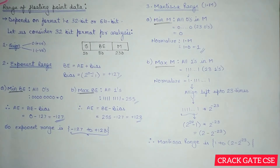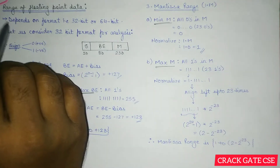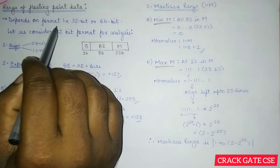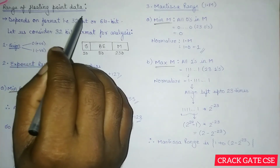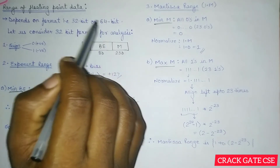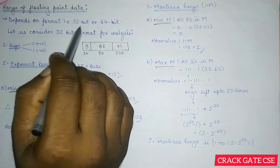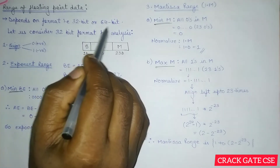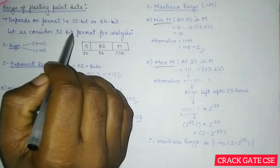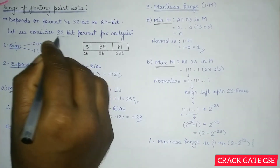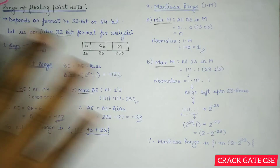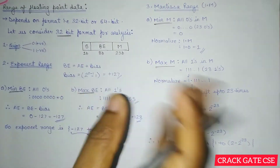The range of floating point data entirely depends on the format we are using — whether 32-bit or 64-bit. The range for 32-bit format will be definitely less than that of the 64-bit format. Here, for explanation I am considering the 32-bit format, but the procedure is the same for all kinds of data formats.